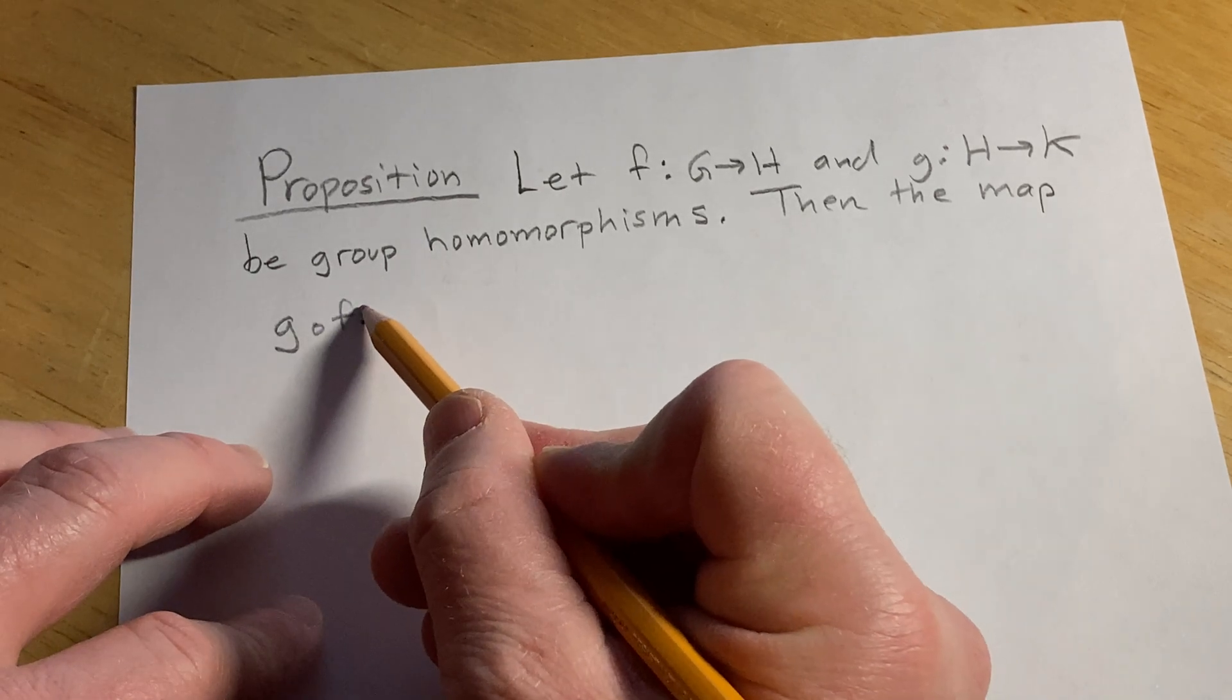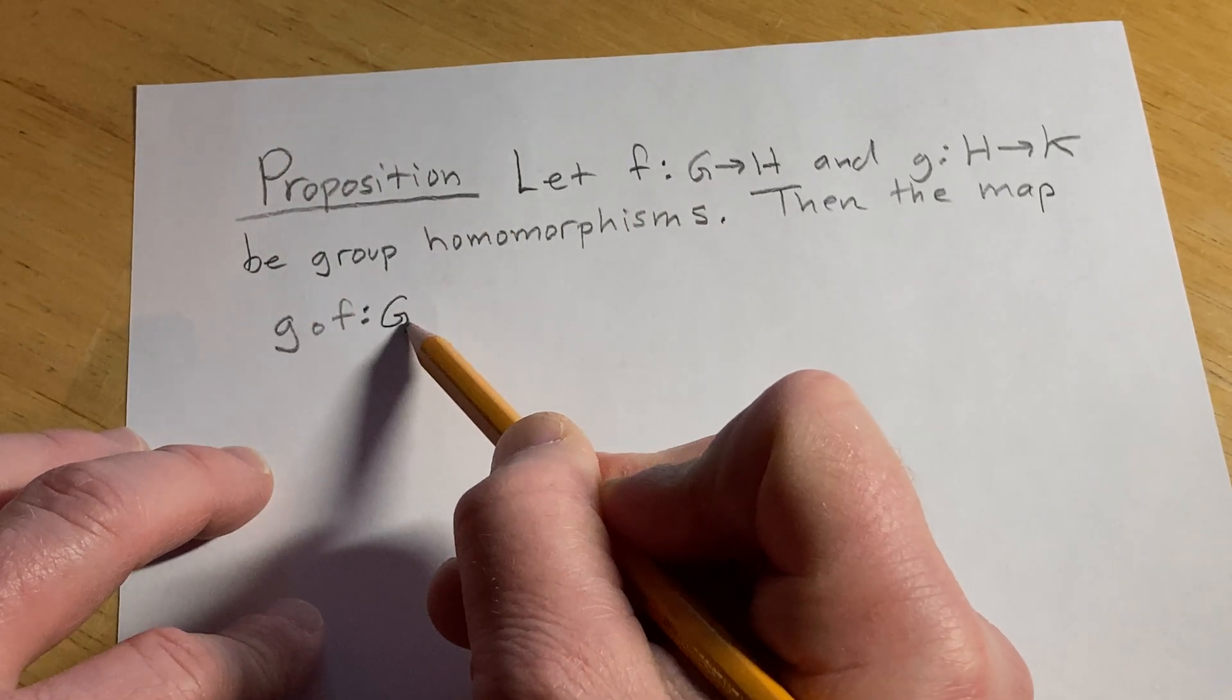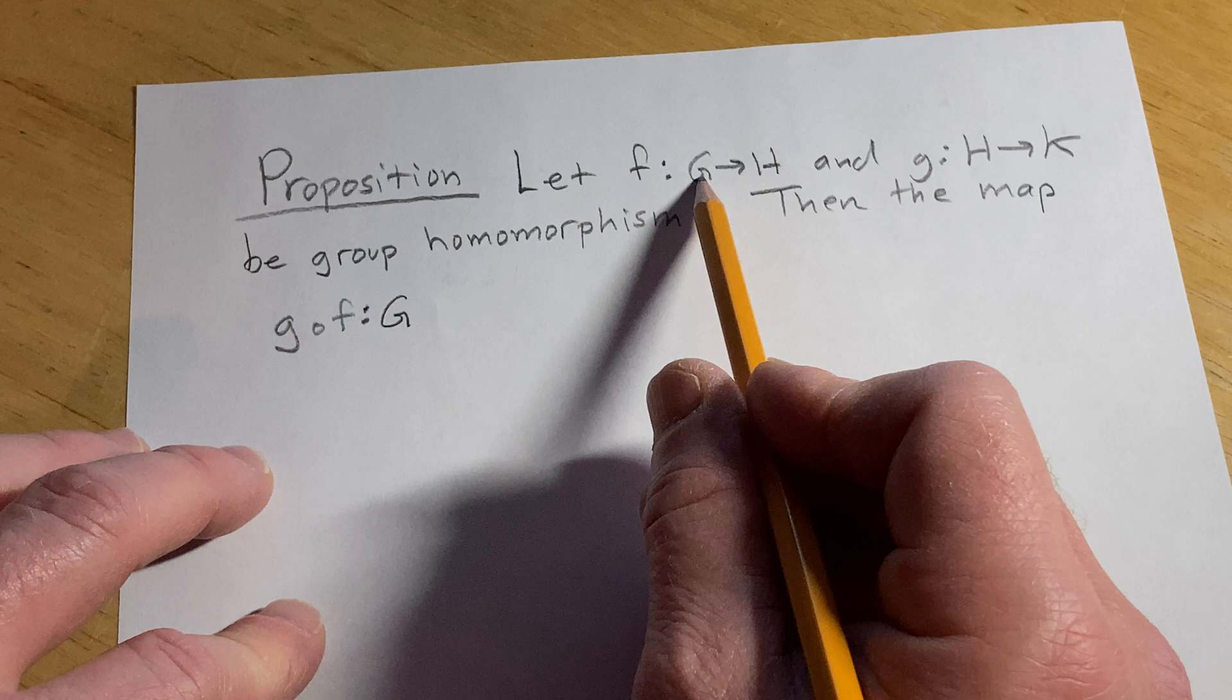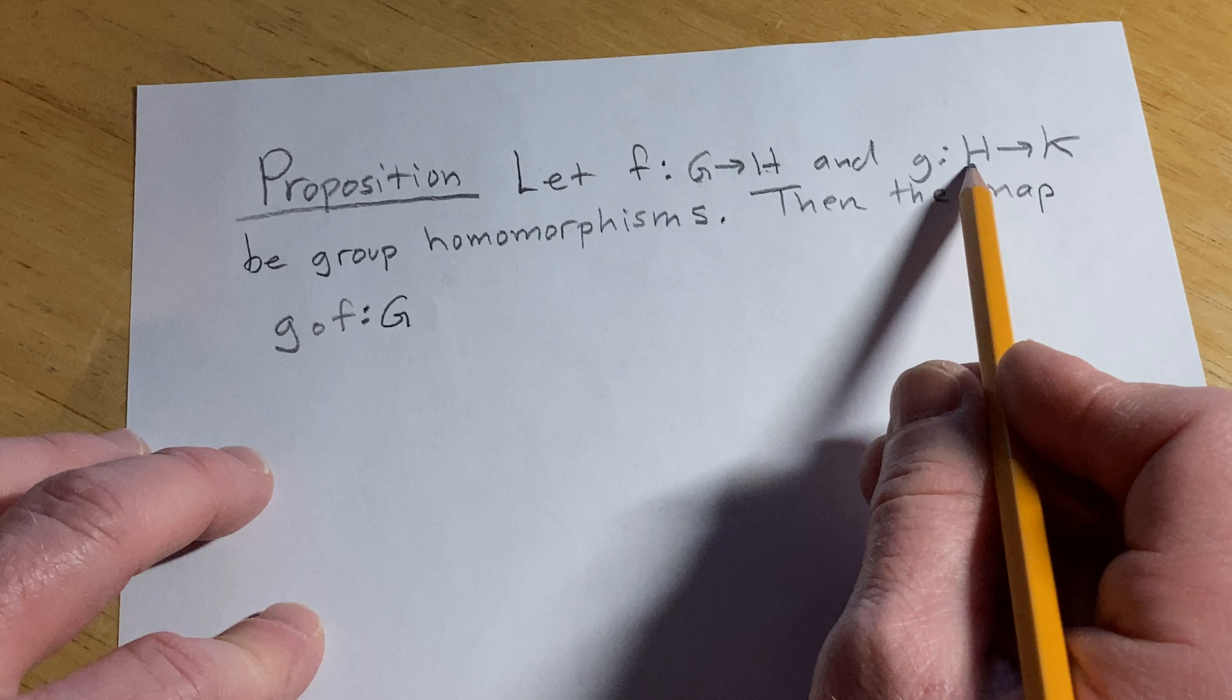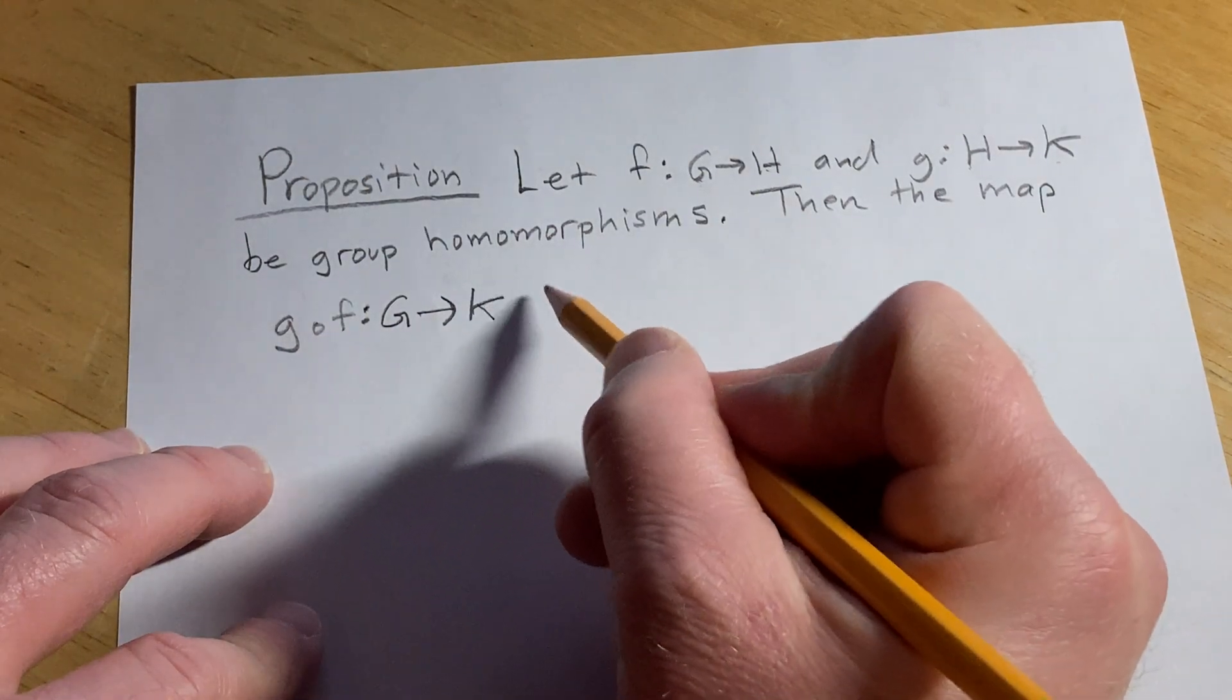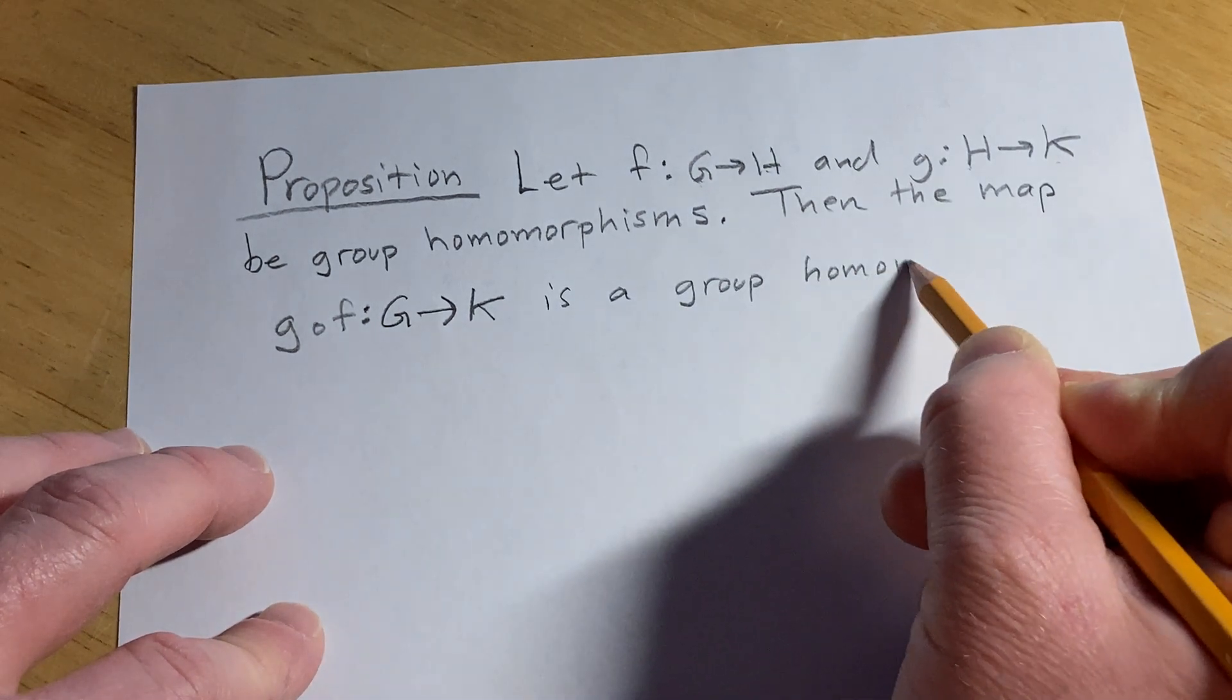And let's think about what the codomain and domain are. So f, its domain is G. So if you were to take an element, because first you apply f. Right, you read this applied right to left. So it takes an element in G, sends it to H, and then g takes an element from H and sends it to K. So this goes from G to K. Okay, and we're going to draw a diagram of this in a minute. Is a group homomorphism.